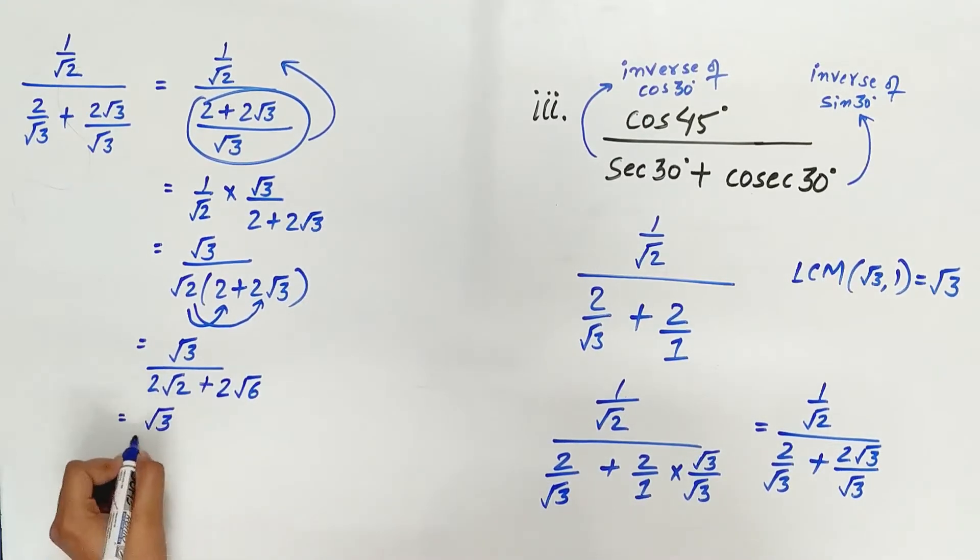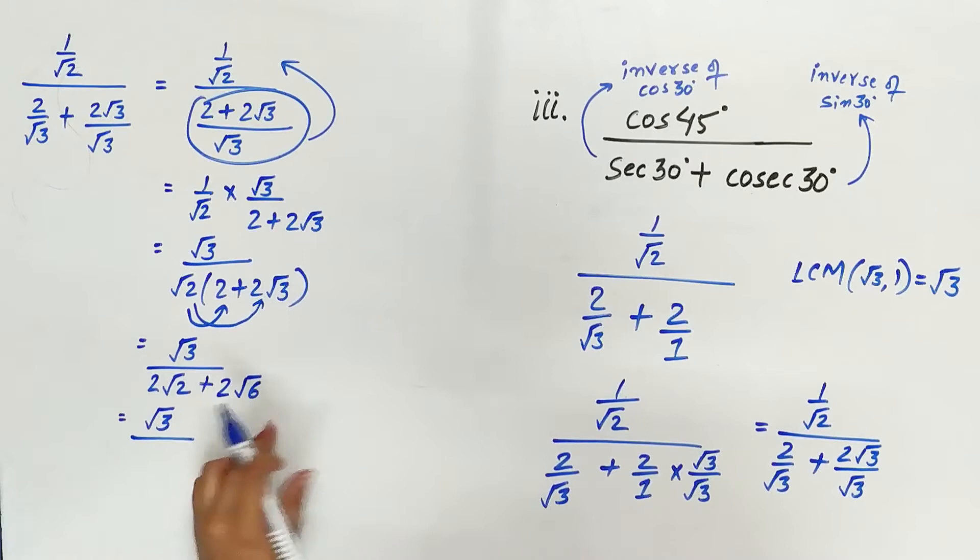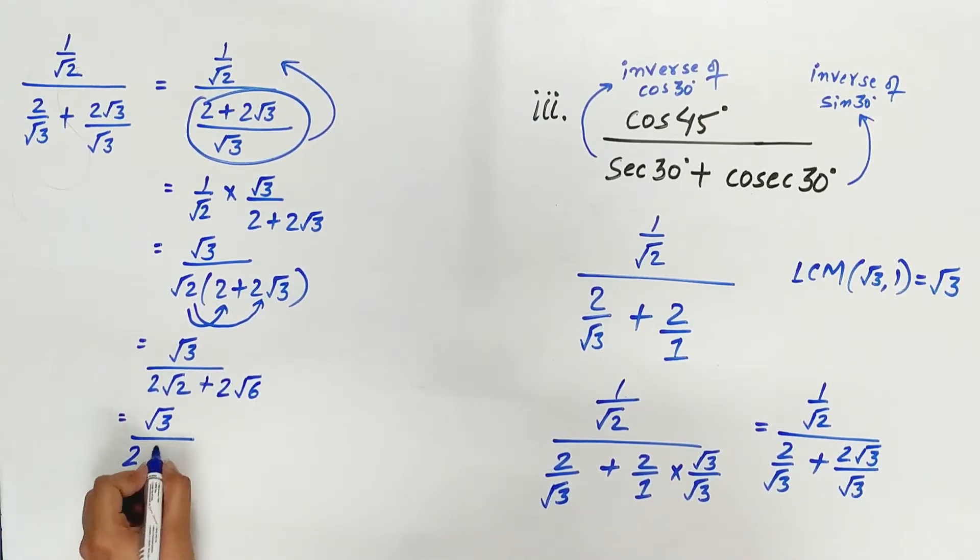Root 3 multiplied by root 2 is root 6. Since 2 is common in both the terms, take it out. Remaining is root 3 divided by 2 multiplied by root 2 plus root 6, which simplifies to root 3 by 2 times root 2 plus root 6.